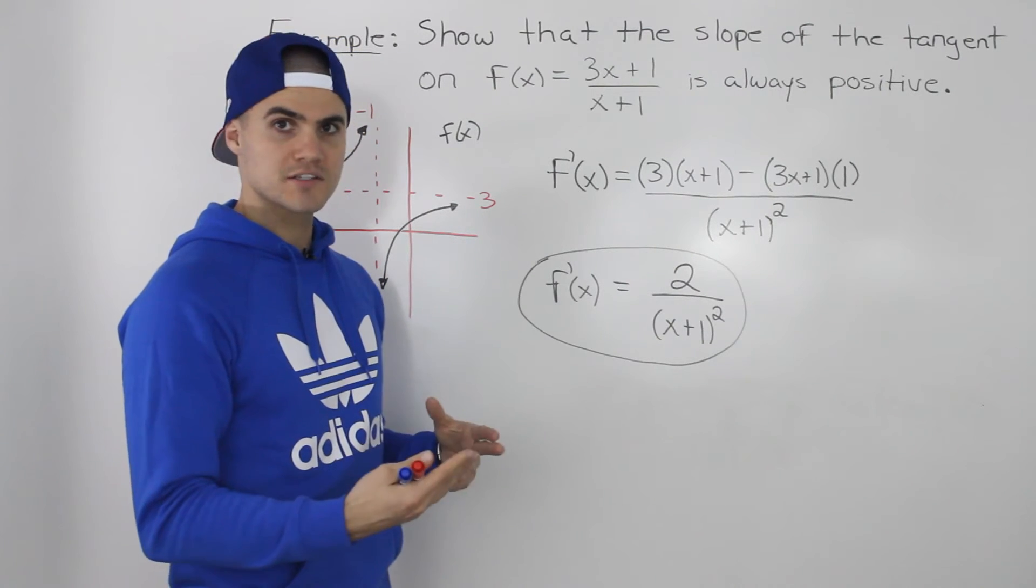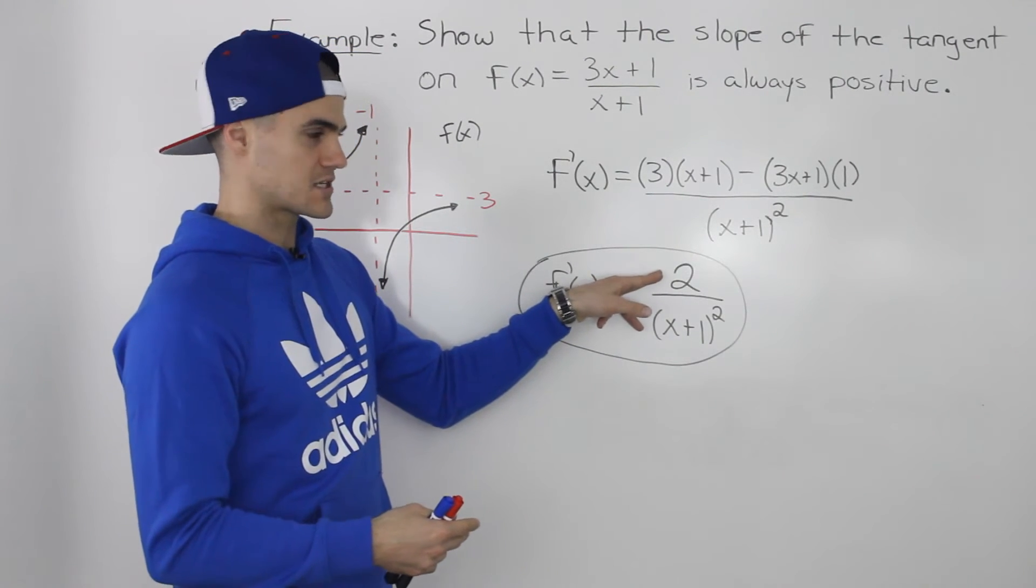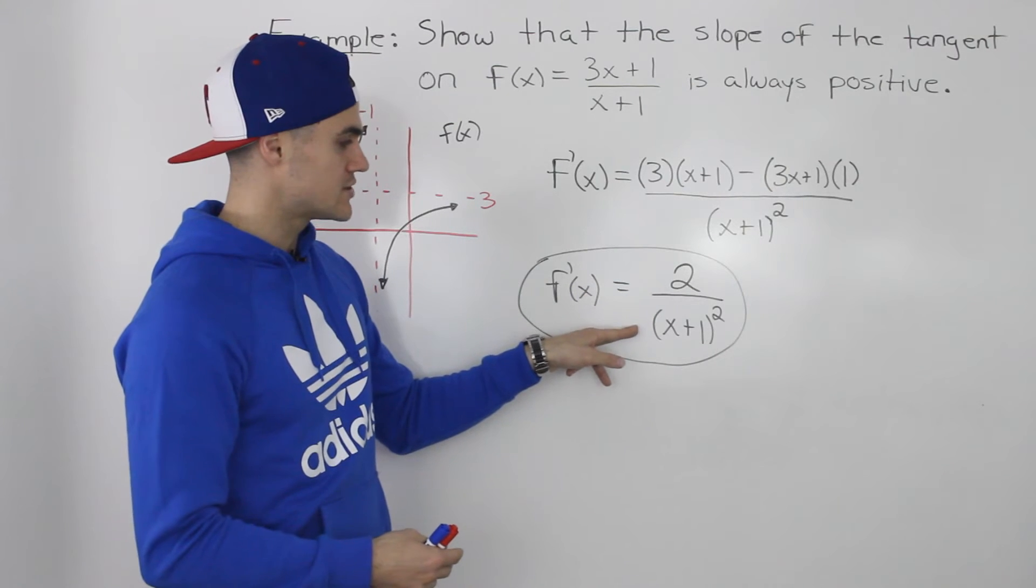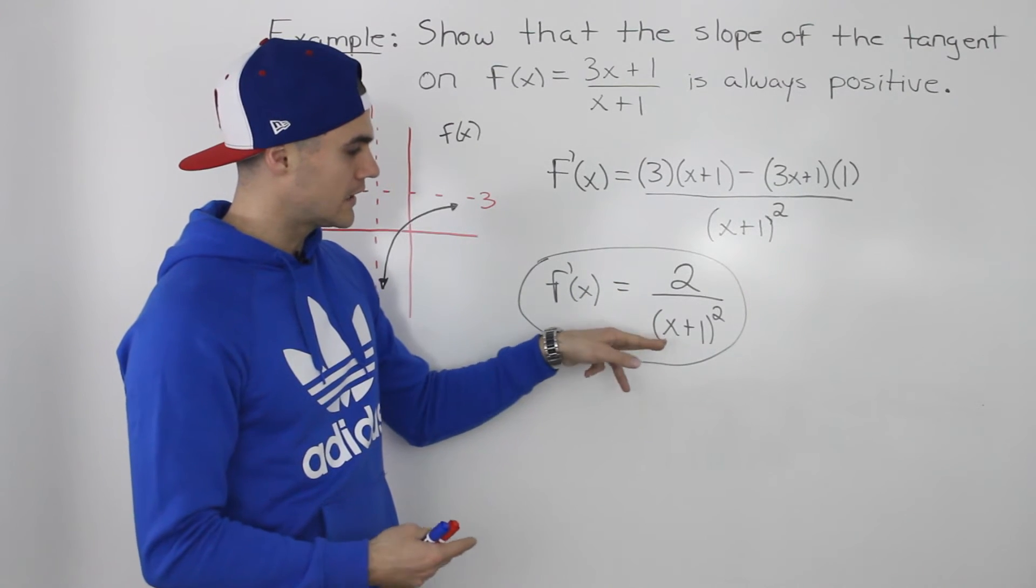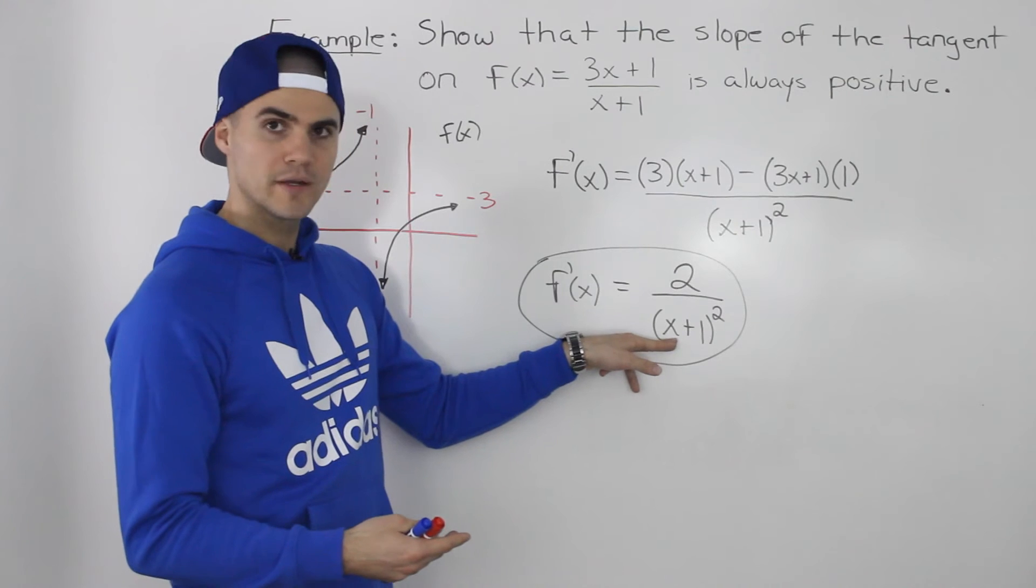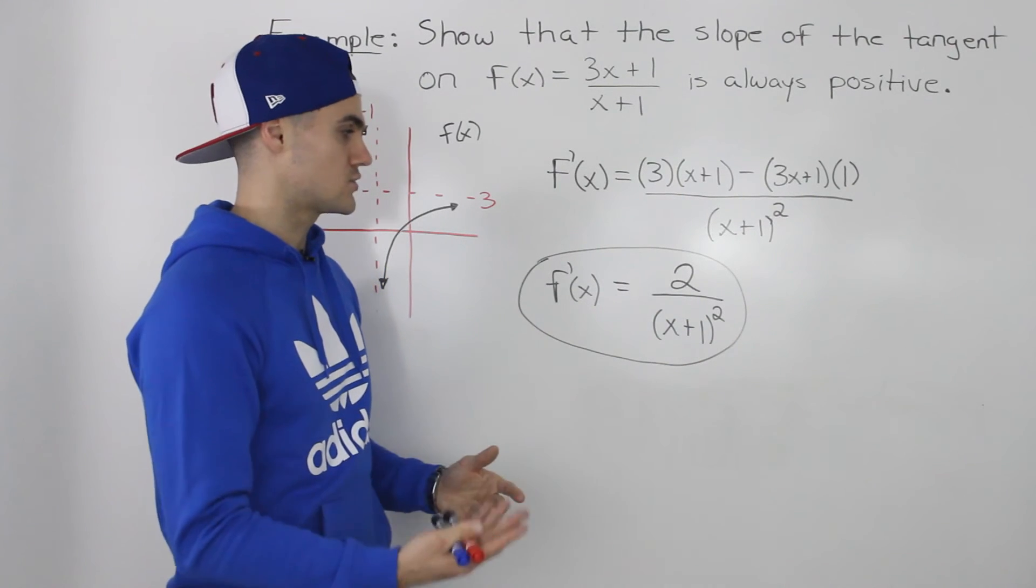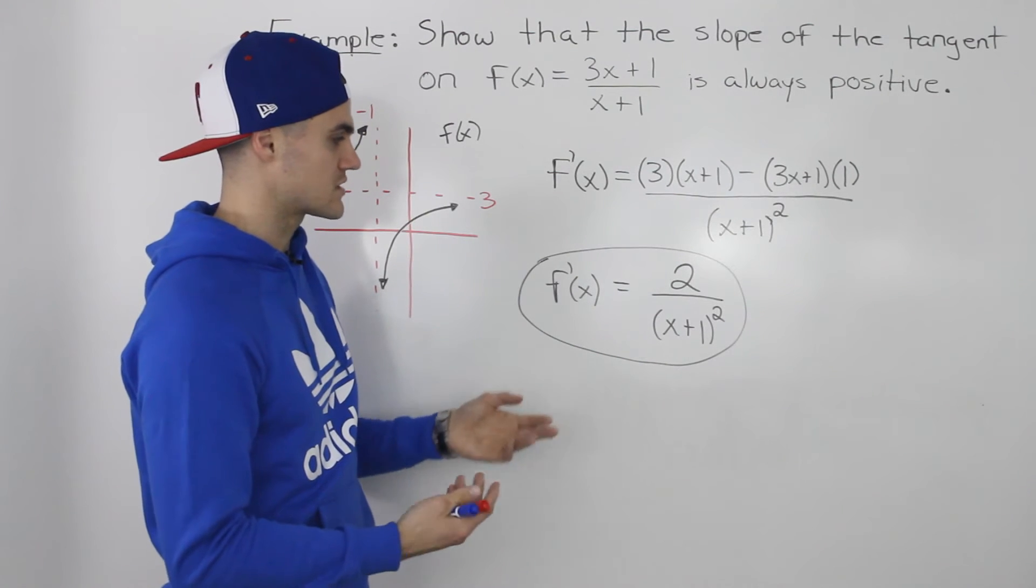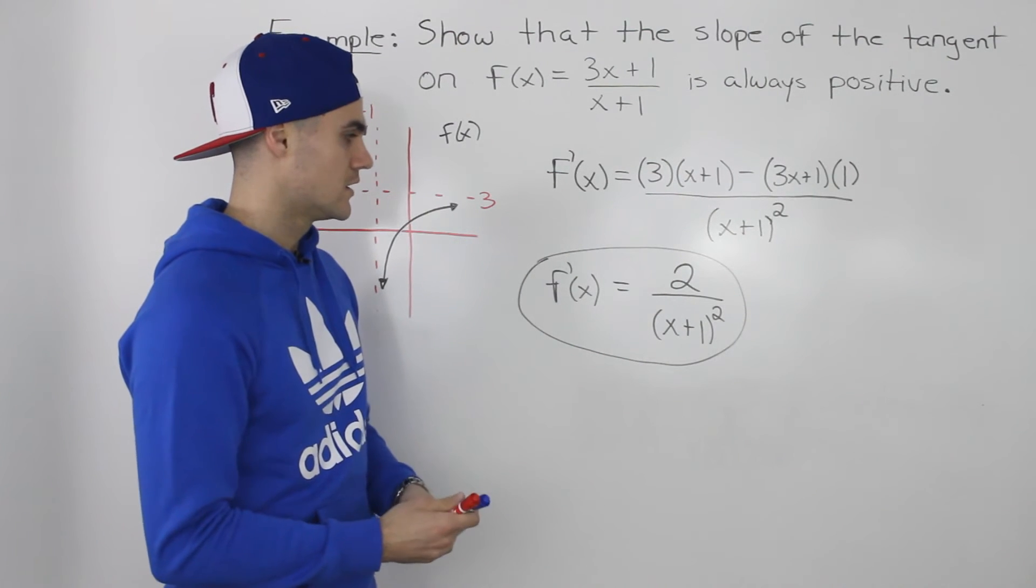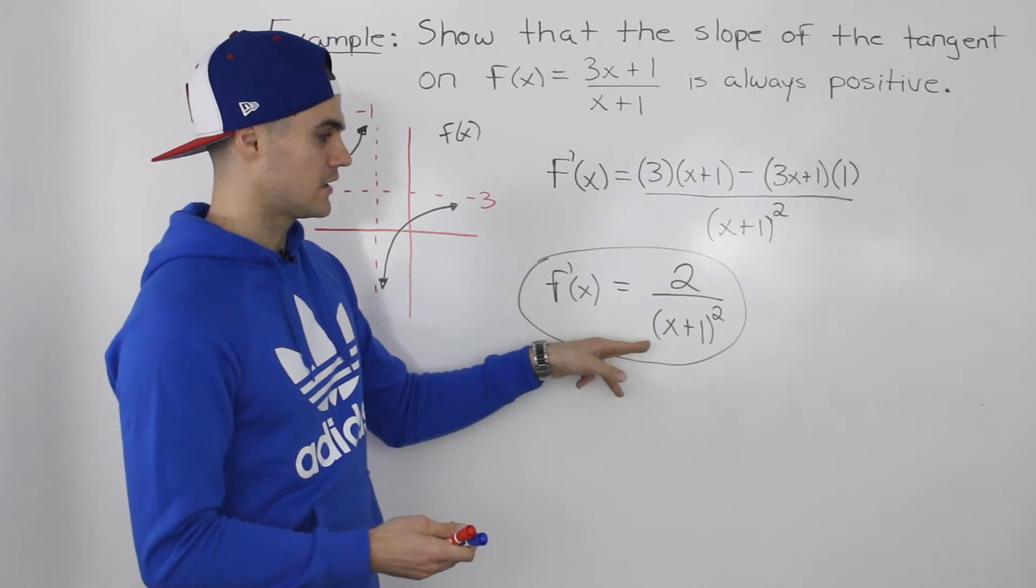the derivative is always going to be positive. The numerator is always going to stay as positive 2, and the denominator, even if we plug in an x value where the bracket will be negative, the fact that we're squaring it will always turn any negatives into a positive. And a positive divided by a positive just gives us another positive number.